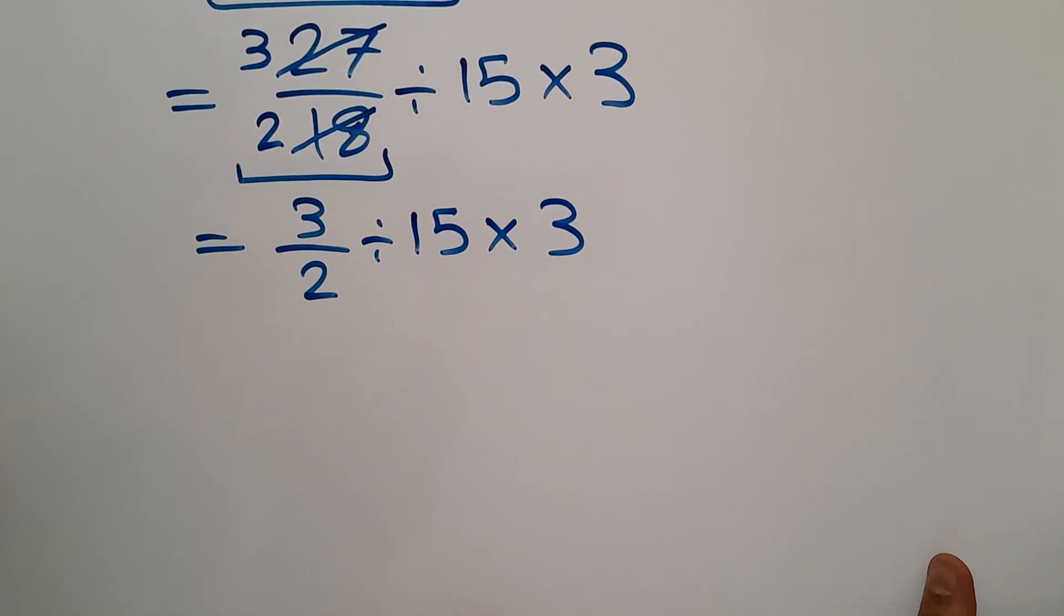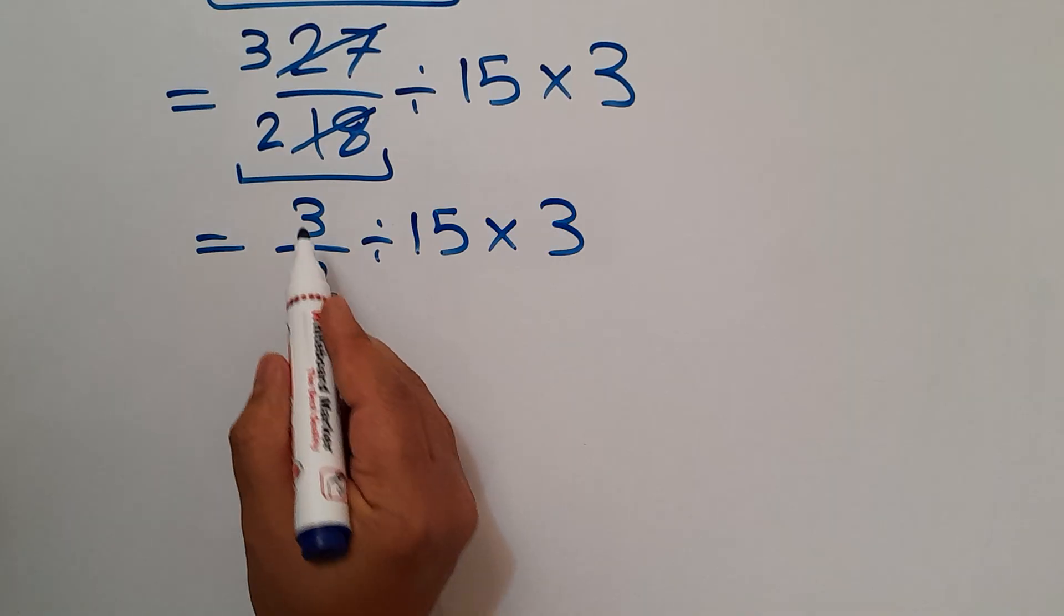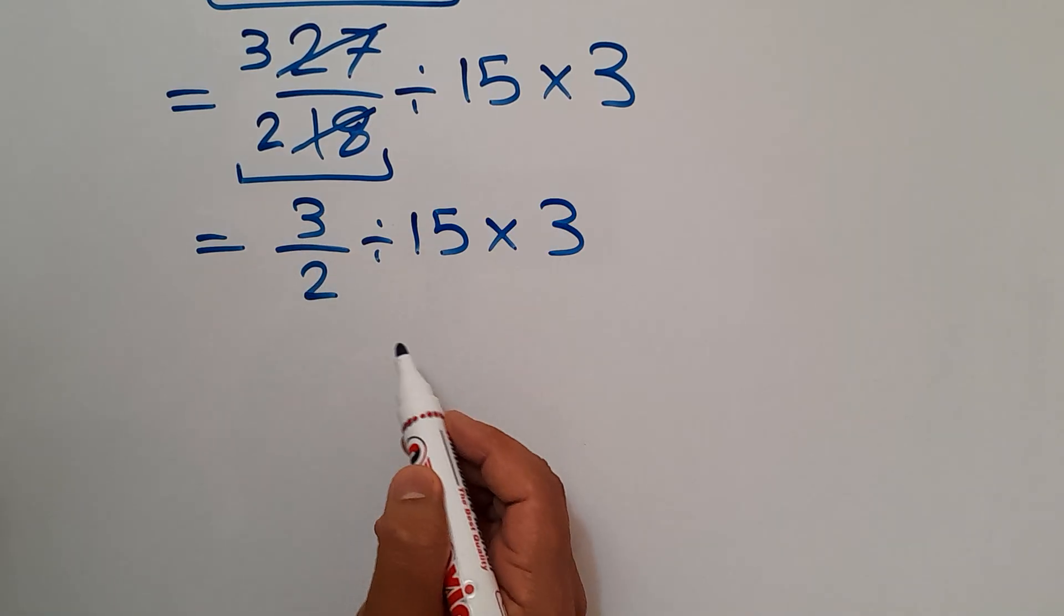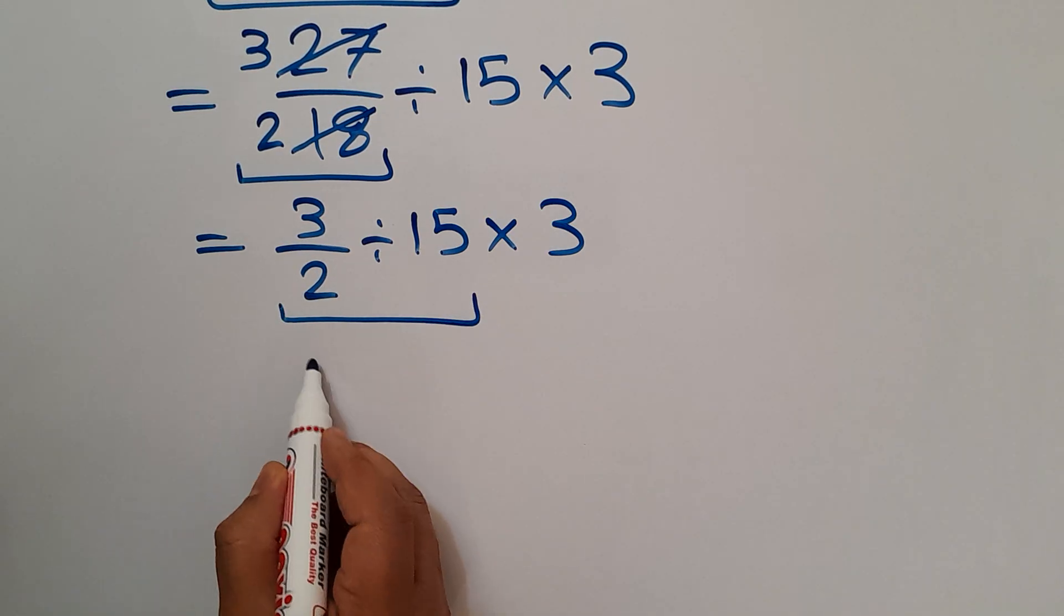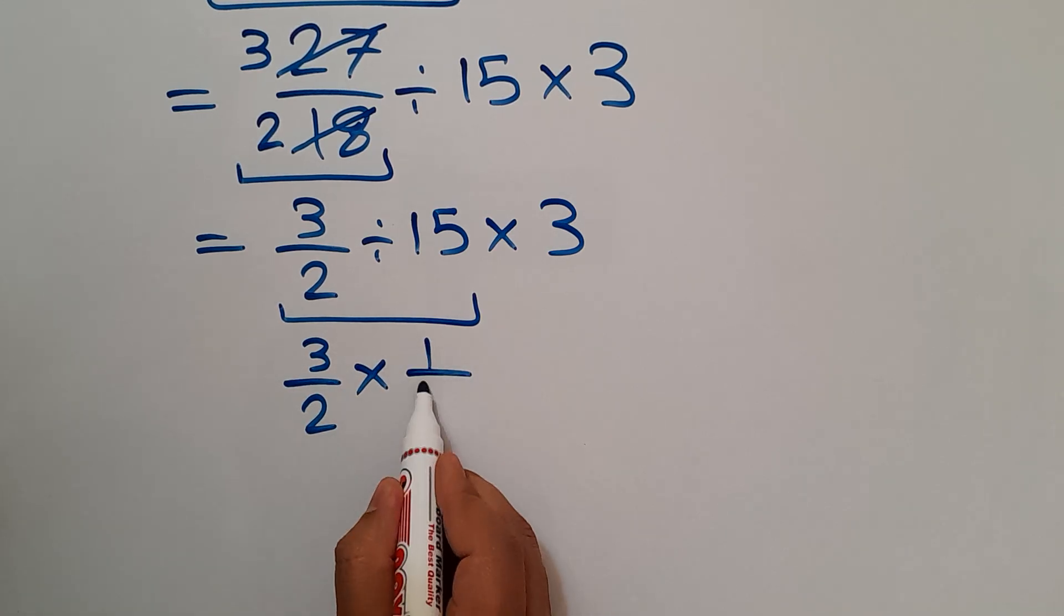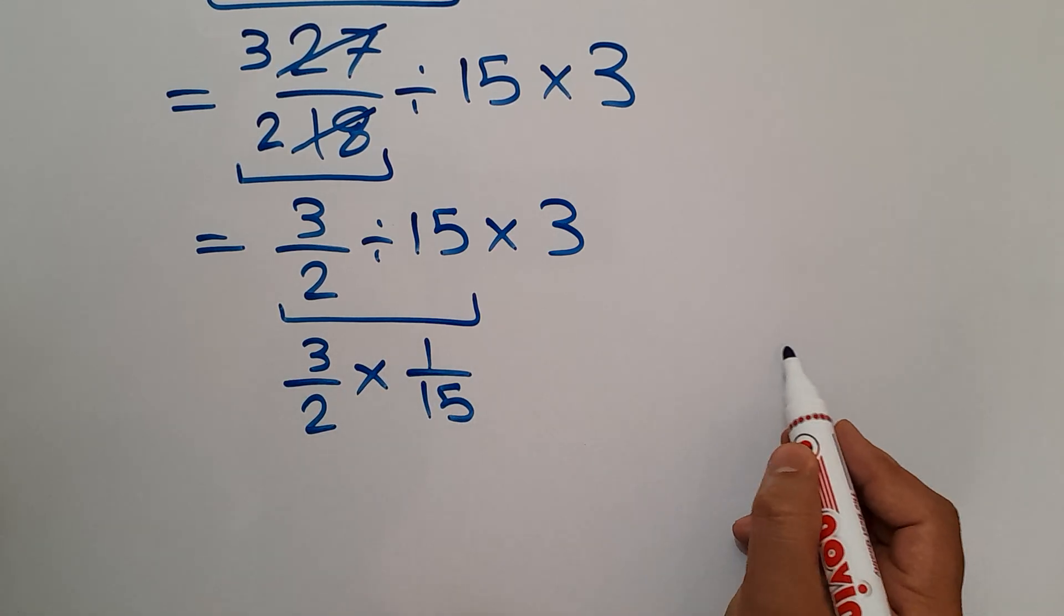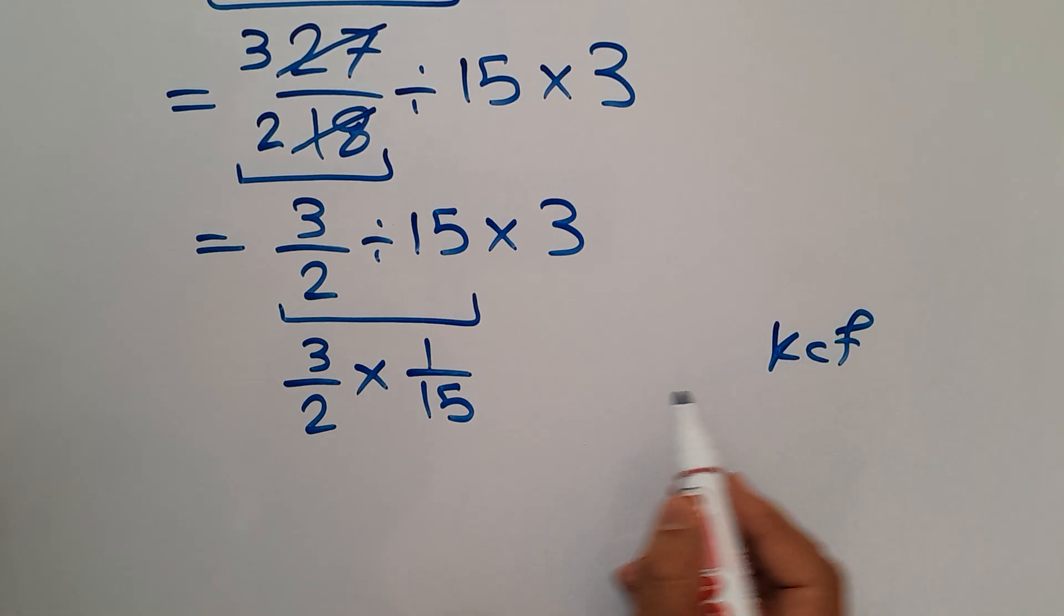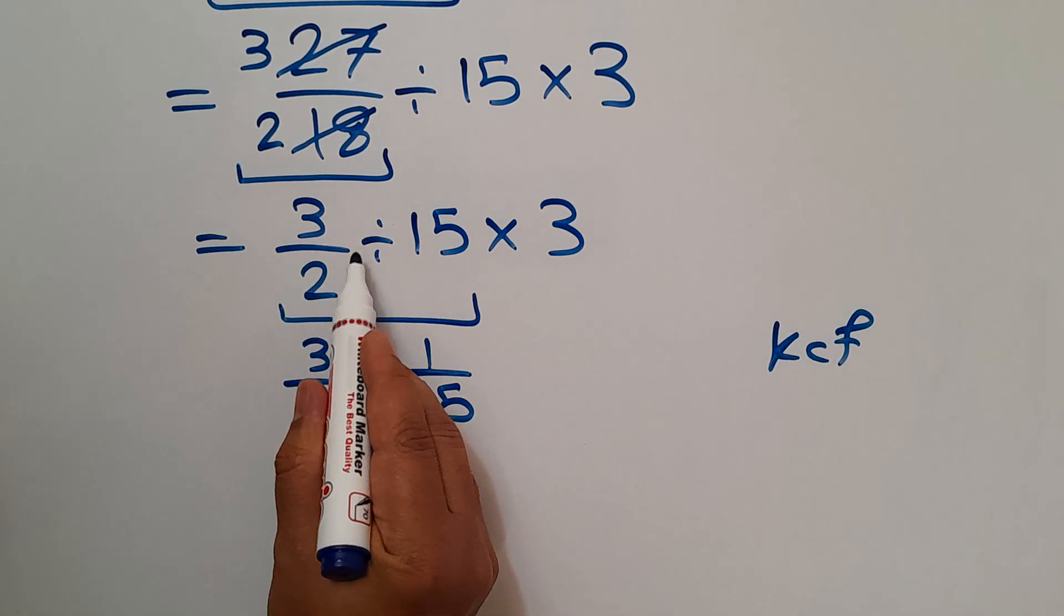Now we have to do this division. 3 over 2 divided by 15, we can write 3 over 2 then times 1 over 15 according to the KCF rule: keep the first fraction, change division to multiplication, and flip the second fraction.